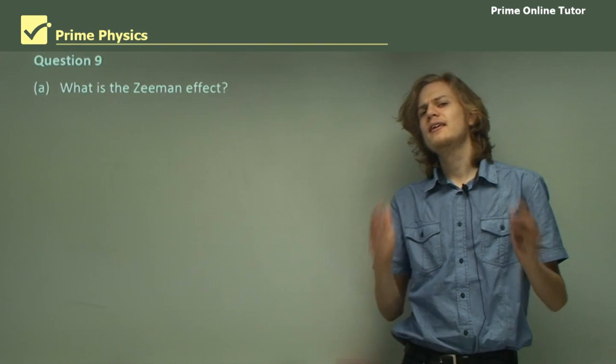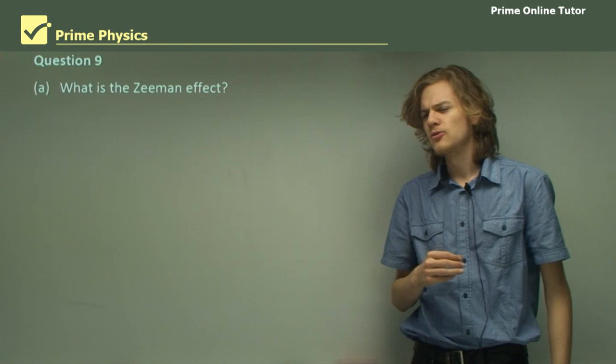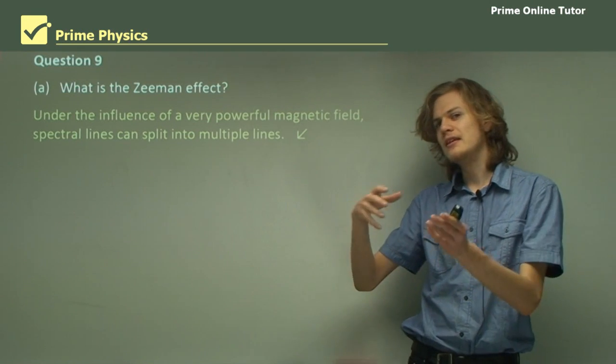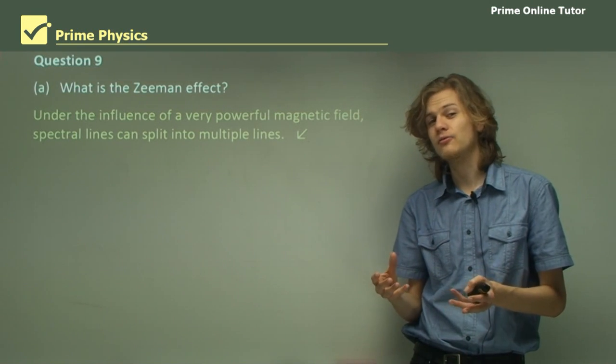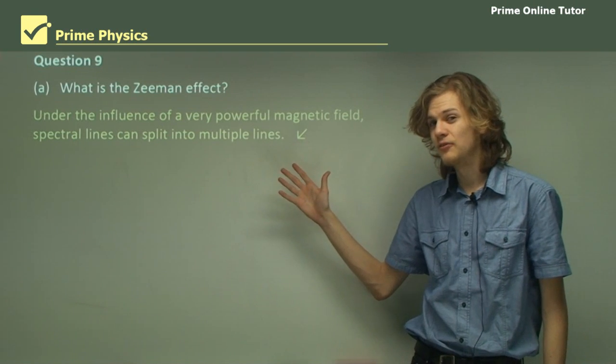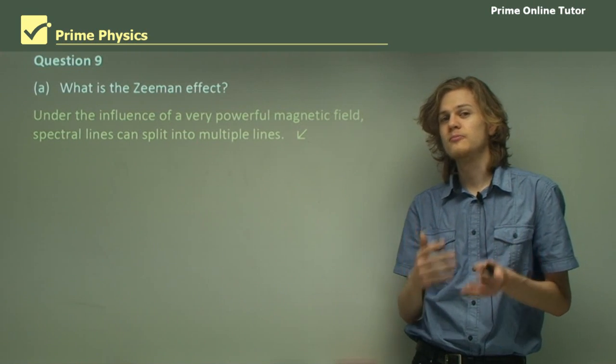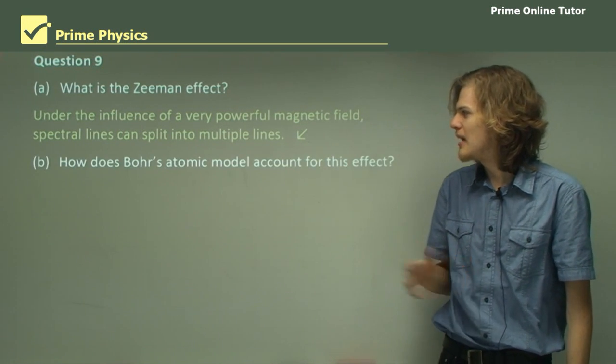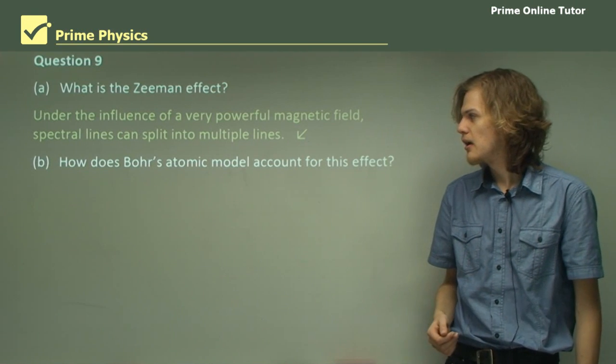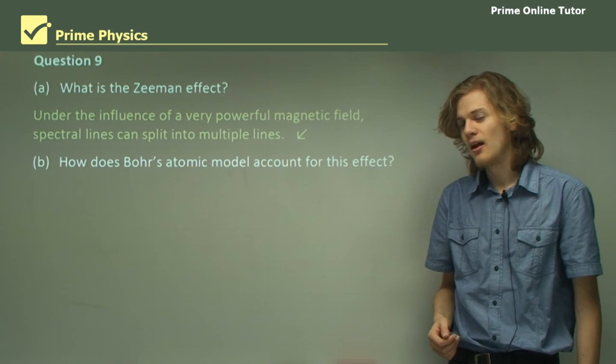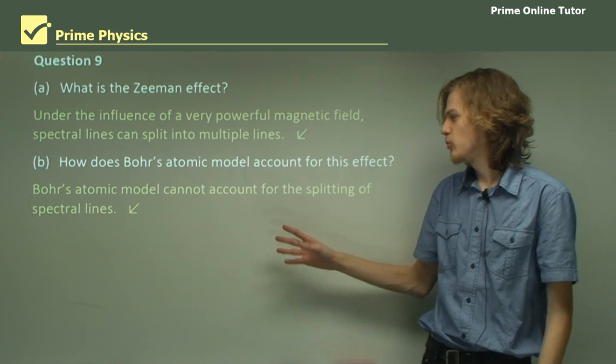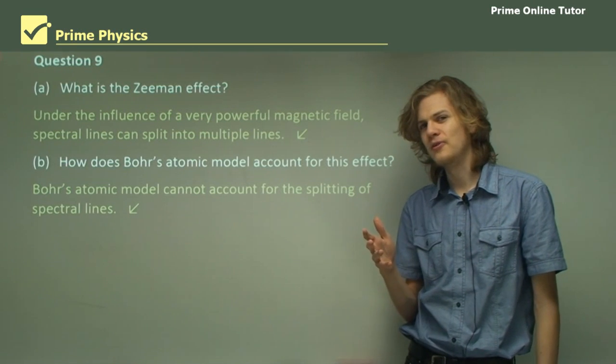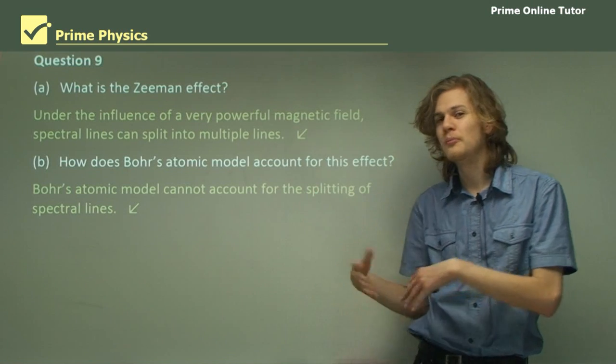Question nine. What is the Zeeman effect? So I'll let you think for a moment. The correct answer is that it's the splitting of spectral lines under a magnetic field. So under a very powerful magnetic field, the spectral lines of elements like hydrogen will in fact split into more than one line. Alright, so part b. How does Bohr's atomic model account for this effect? So I'll give you a moment to think about that. And the answer is, it cannot. Bohr's atomic model has no way at all to account for the splitting of the spectral lines. It's a very unusual effect. And of course, it's what led Bohr's model to be improved upon later on.